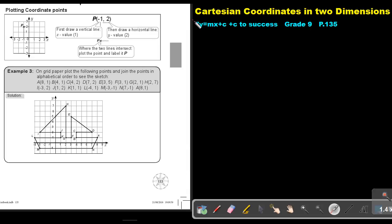Part 2. We are going to continue with Cartesian coordinates in two dimensions. You will find this on page 135 in the Namibia Mathematics Grade 9 textbook, Y equals MX plus C to success. We are going to focus on plotting coordinate points, just to reverse what we did in part 1.